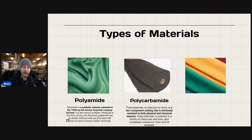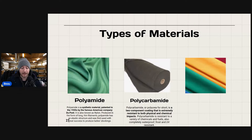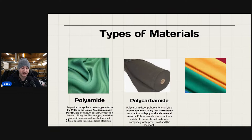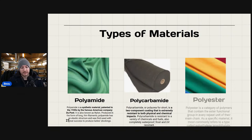Polycarbamide, also known as polyurea, is a two-component coating extremely resistant to both physical and chemical impacts. It is resistant to a variety of chemicals and fuels, completely waterproof, frost-resistant, and UV-resistant. You'd probably see that in more soft-shell jackets, waterproof gear, and rain gear.